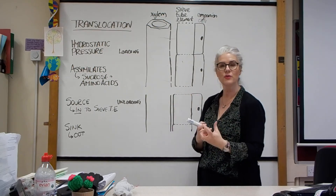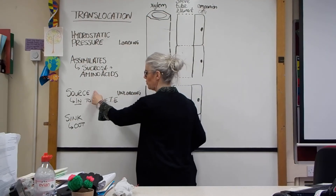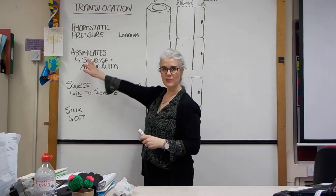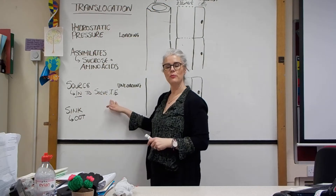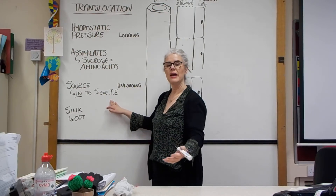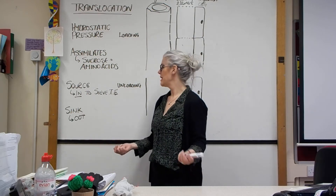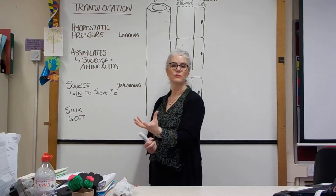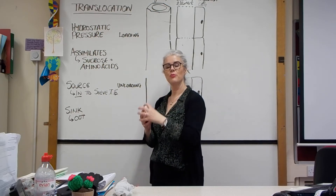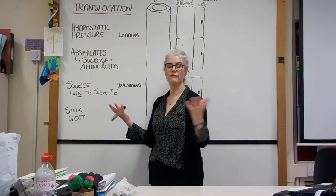We're going to have a look at something called a source and a sink. A source is anywhere where assimilates move into the sieve tube elements — that might be a place where photosynthesis is occurring and sucrose has been made, or it might be a potato tuber which stores starch and in the new growing season breaks that starch down to move those sugars to the site of respiration for new growth.